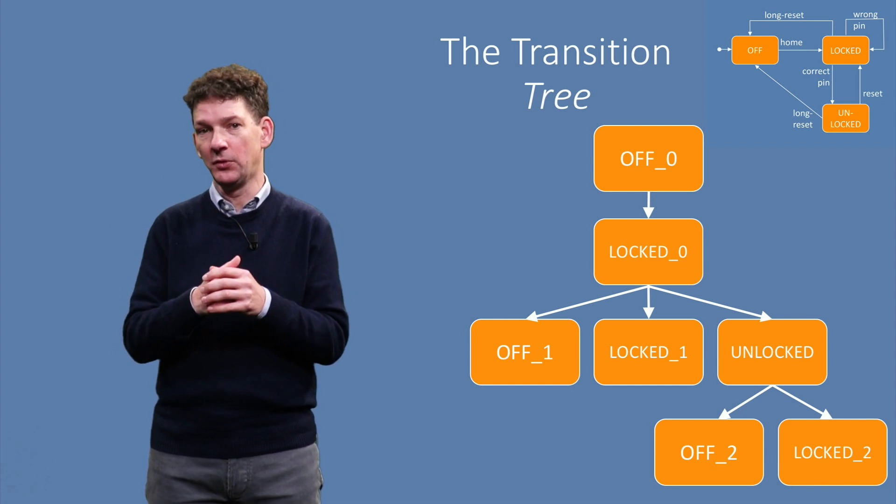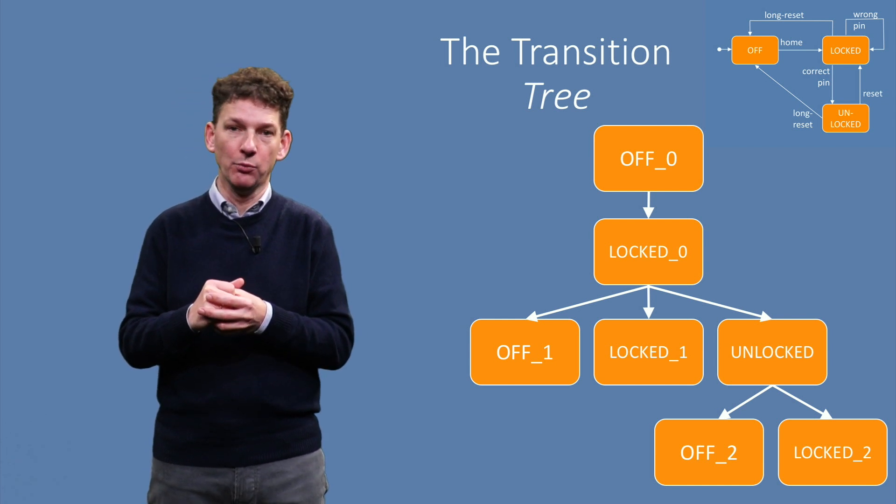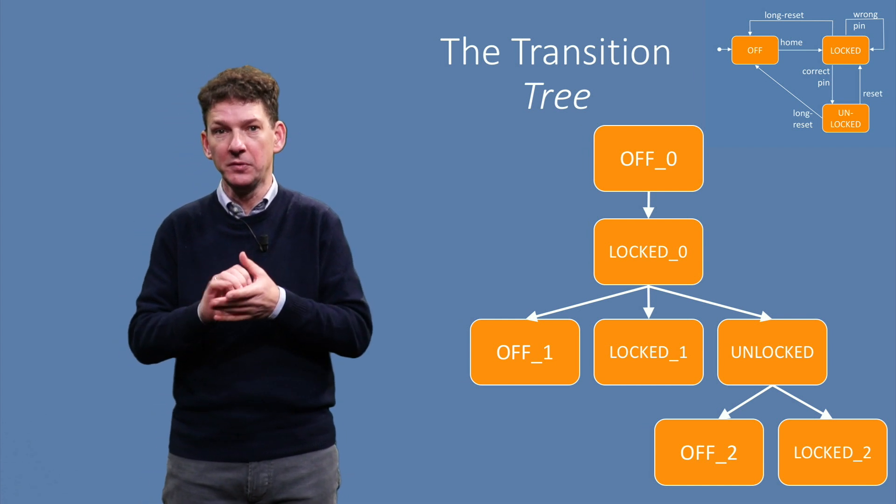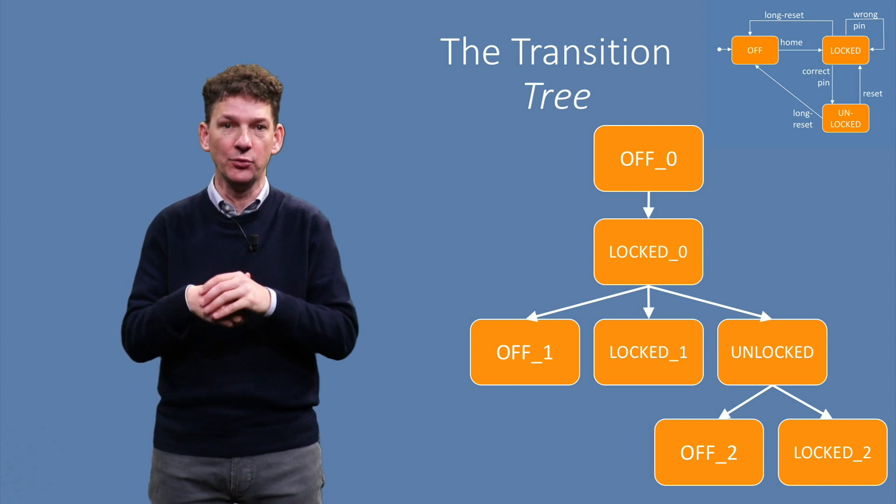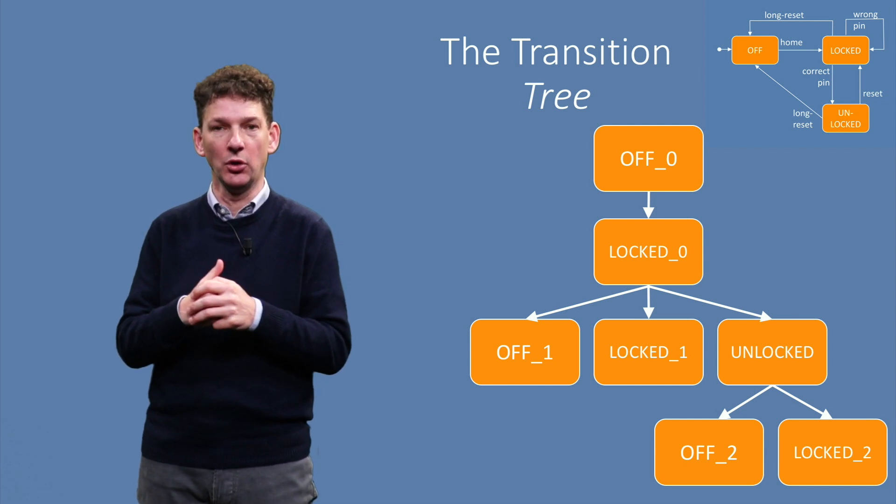Each loop is unfolded once. Furthermore, the tree can help us to find the shortest path in the graph to any state, simply by following the tree.